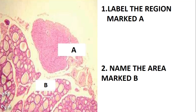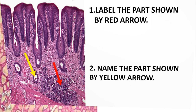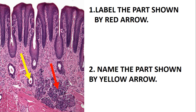The next slide asks you to label the region marked A. This slide has two regions: one region here and another region there. The other region has some follicles, but this other side does not. So A is simply the parathyroid gland, and B is just the thyroid. The parathyroid is an island of gland which does not have follicles. We'll look at these two glands in detail.